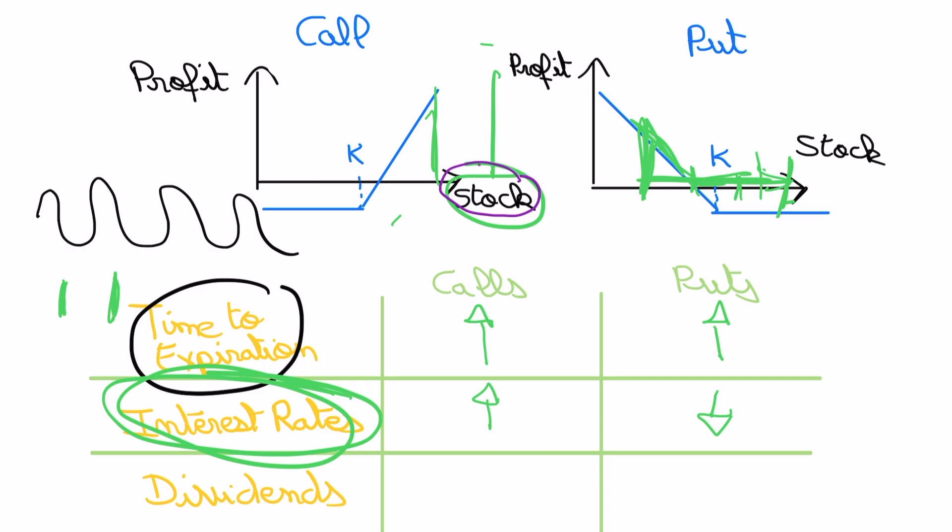So the higher the dividend, when dividends go up you expect your stock yield to go down. For calls, if dividends go up your stock is going to go in that direction, so you're going to go out of the money. So the value of your call will go down.